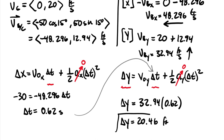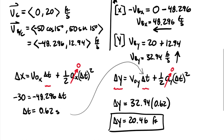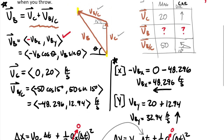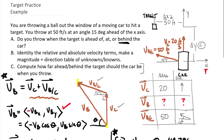So 20.46 feet is the distance you need to be behind the target when throwing the ball at 50 feet per second out the window in order to strike it. As engineers, we predict with math — you can mark off 20.46 feet, release the ball at that point, and hit the target.